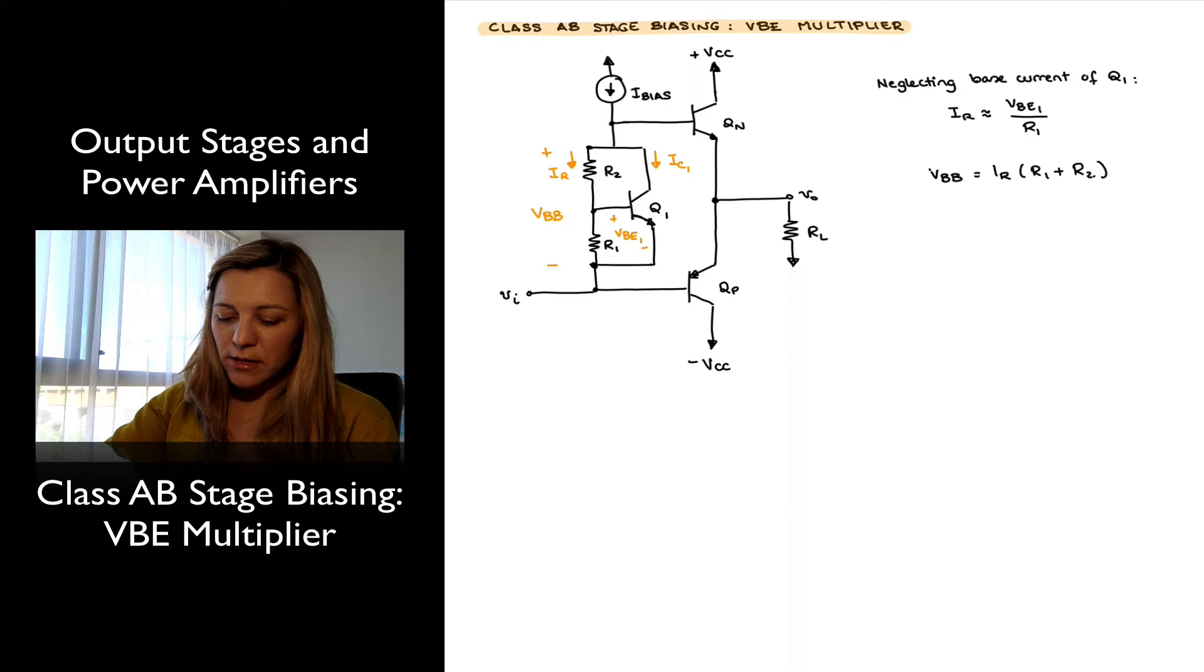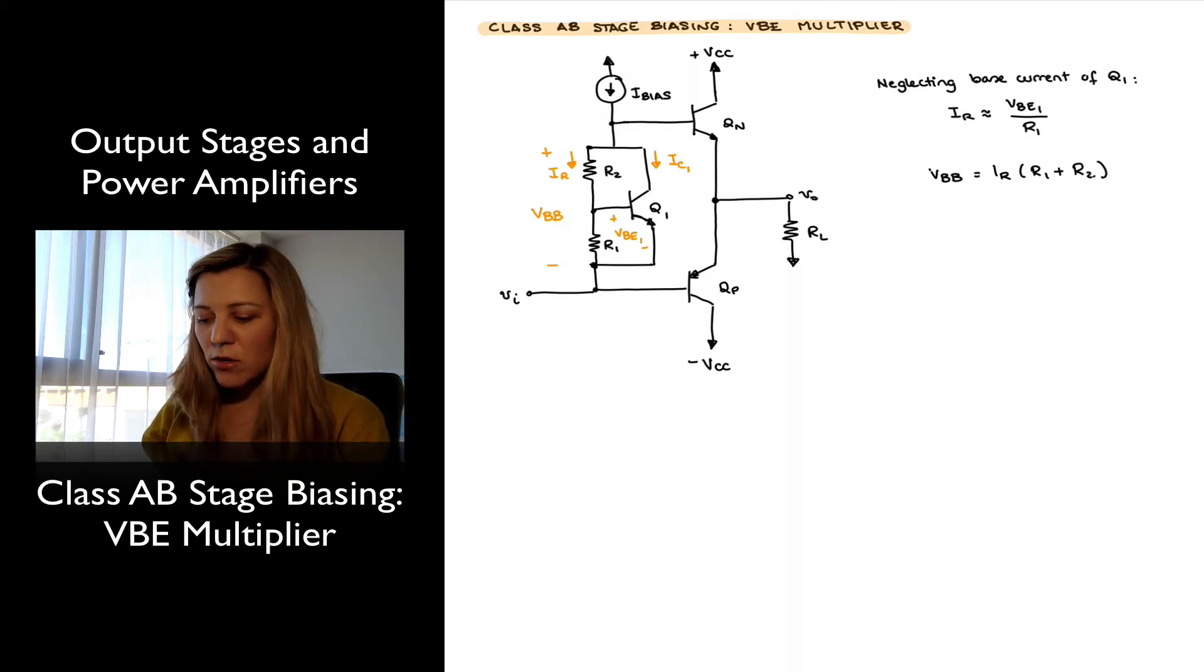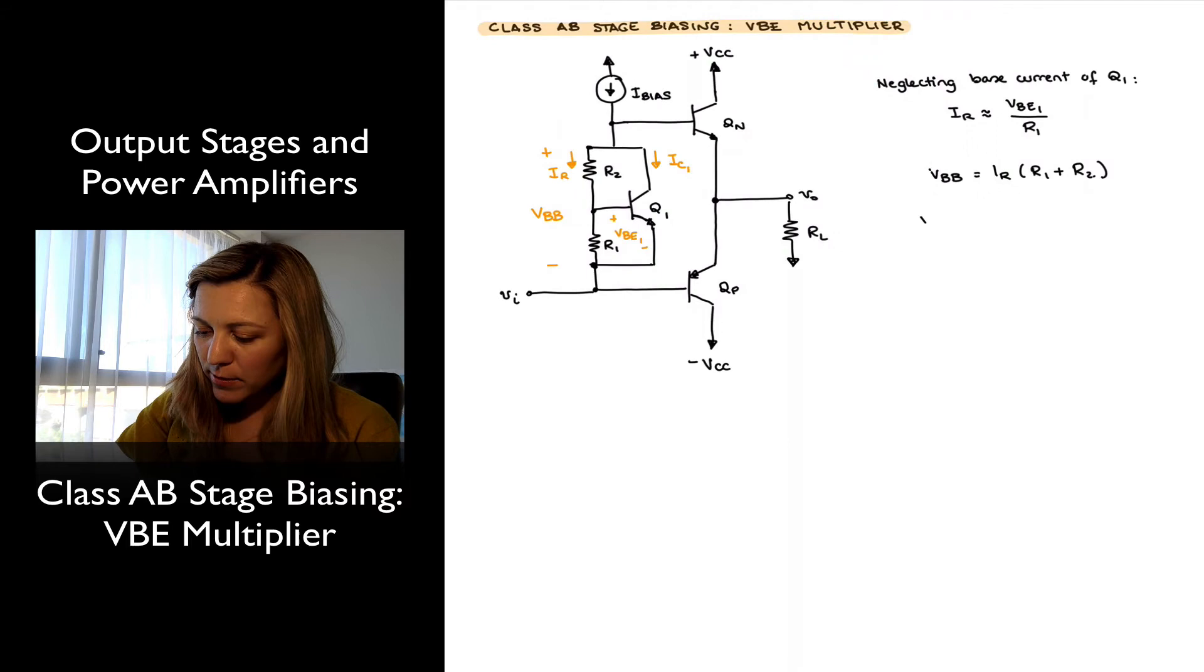In that case, I can calculate my VBB voltage, which is going to be equal to the current IR times the series combination of resistors R1 and R2. Replacing IR with its value, I get VBB equal to VBE1 times (1 plus R2 over R1).